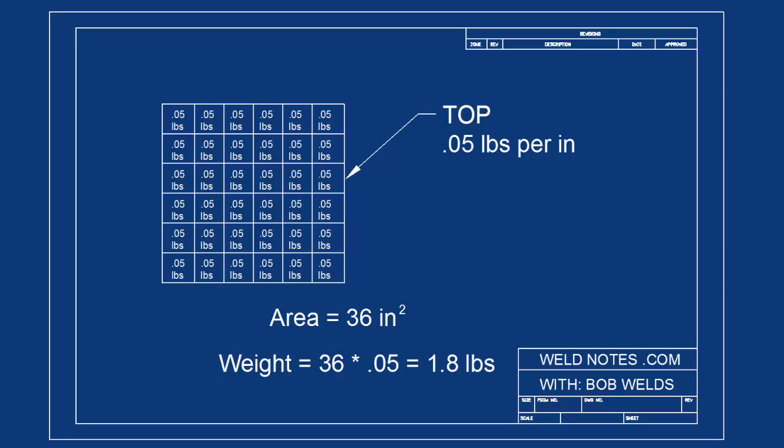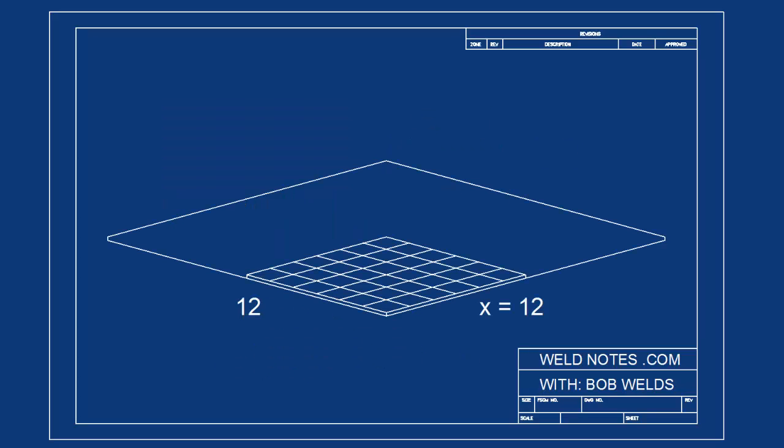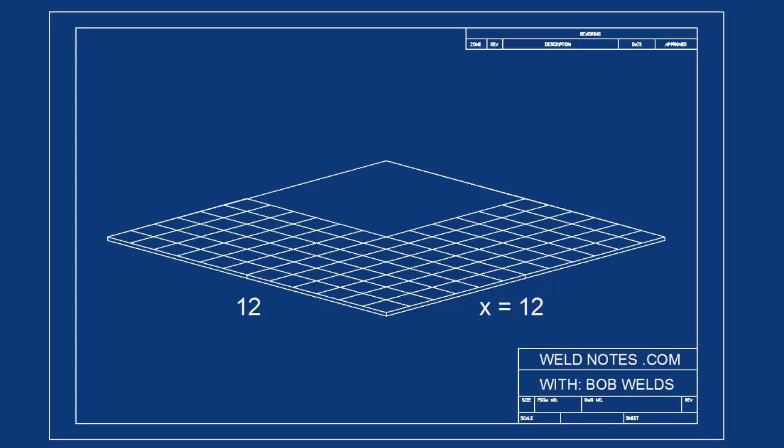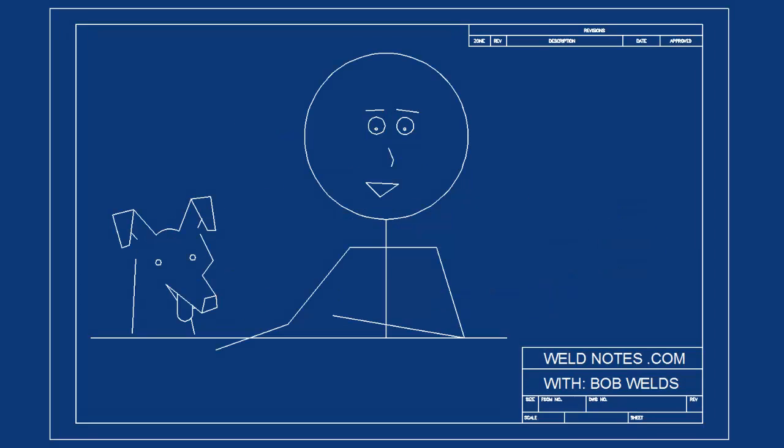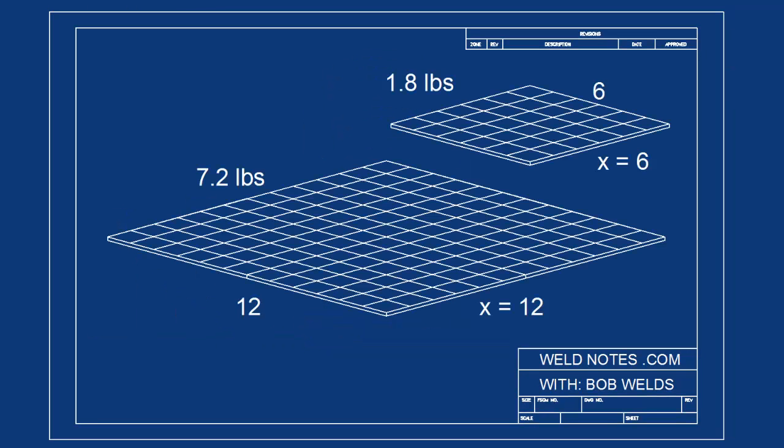What if we double the length of the side? What if the length of one side was 12 inches? You might think that the top would be twice as heavy. But look at this. 12 times 12 is 144. And 144 square inches times 0.05 pounds per square inch is equal to 7.2 pounds. Now that's way more than double, it's four times heavier. We quadrupled the weight.